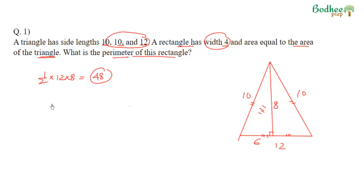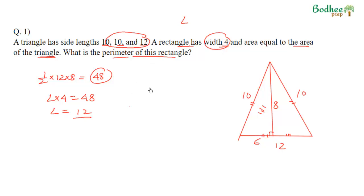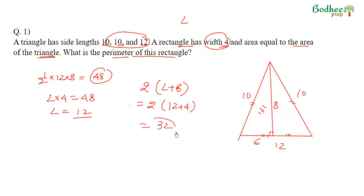So 48 is the area of the rectangle. Assuming the length of the rectangle is L, then L into 4 equals 48, so L equals 12. We have the length and the width. The perimeter is 2 times (L + B), which is 2 into (12 + 4), giving 32. So 32 is the answer for this question.